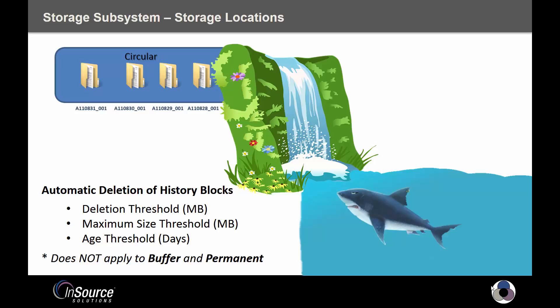There are different ways to set up automatic deletion of your history blocks: by age, by a deletion threshold based on how much hard drive space you have left, and when you hit that amount of hard drive space the system starts deleting history blocks. Another option is the maximum size threshold — if a history block gets too large, it can be placed into oblivion.